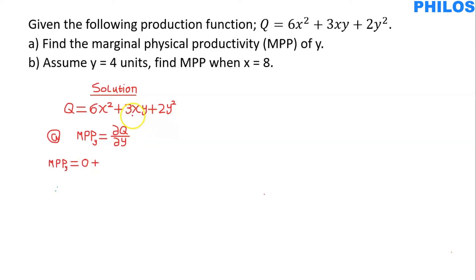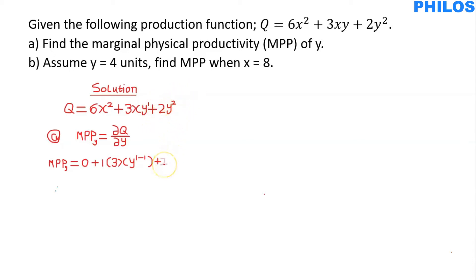Now, when we take the second term 3xy, it has an exponent of 1 in y. So to differentiate it with respect to y, we multiply the whole thing by 1: 1 times 3xy to the exponent 1 minus 1, then subtract 1 from the exponent. Plus, for the last term 2y squared, we differentiate with respect to y: y has an exponent of 2, so we multiply by 2 and subtract 1 from the exponent — giving 2 times 2y to the exponent 2 minus 1.